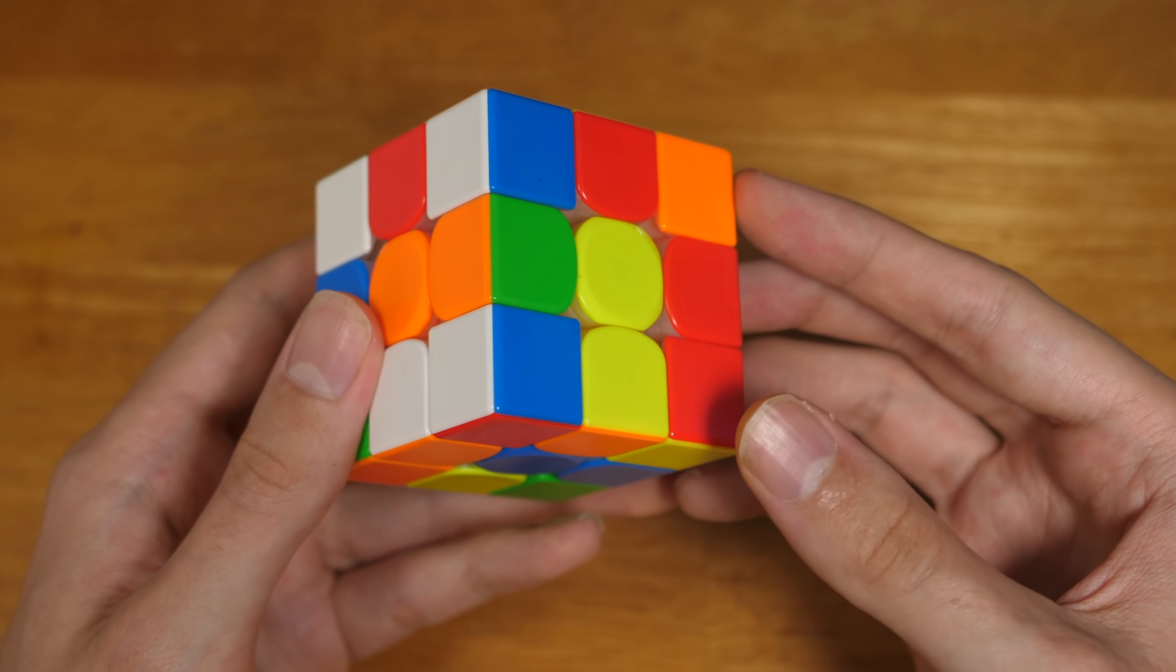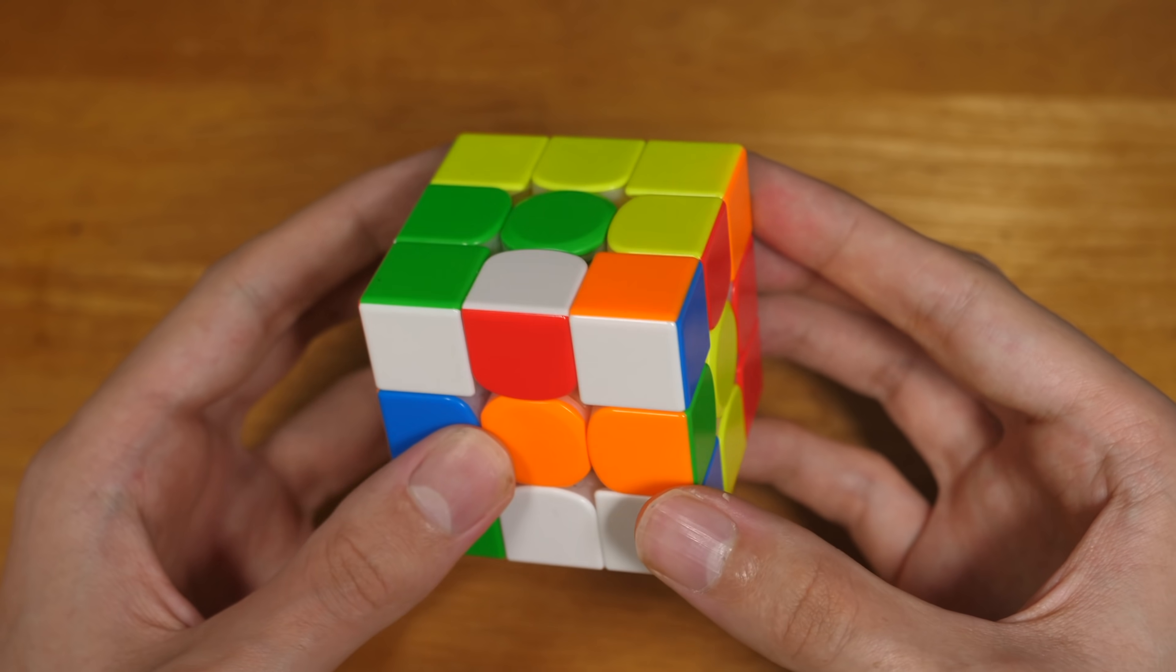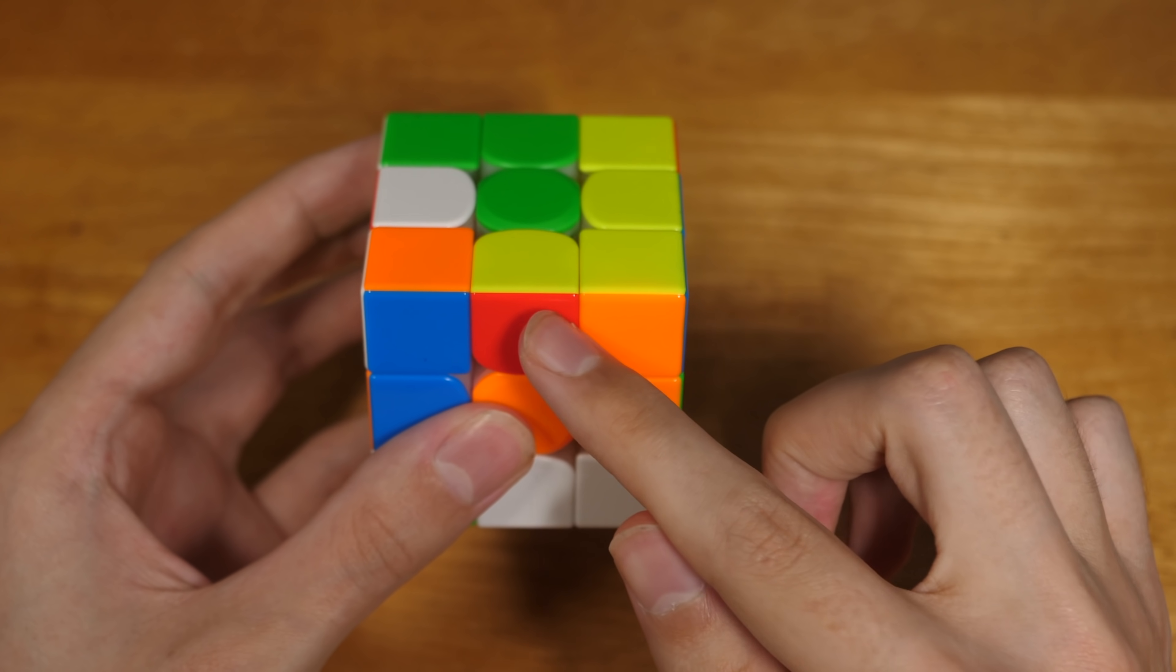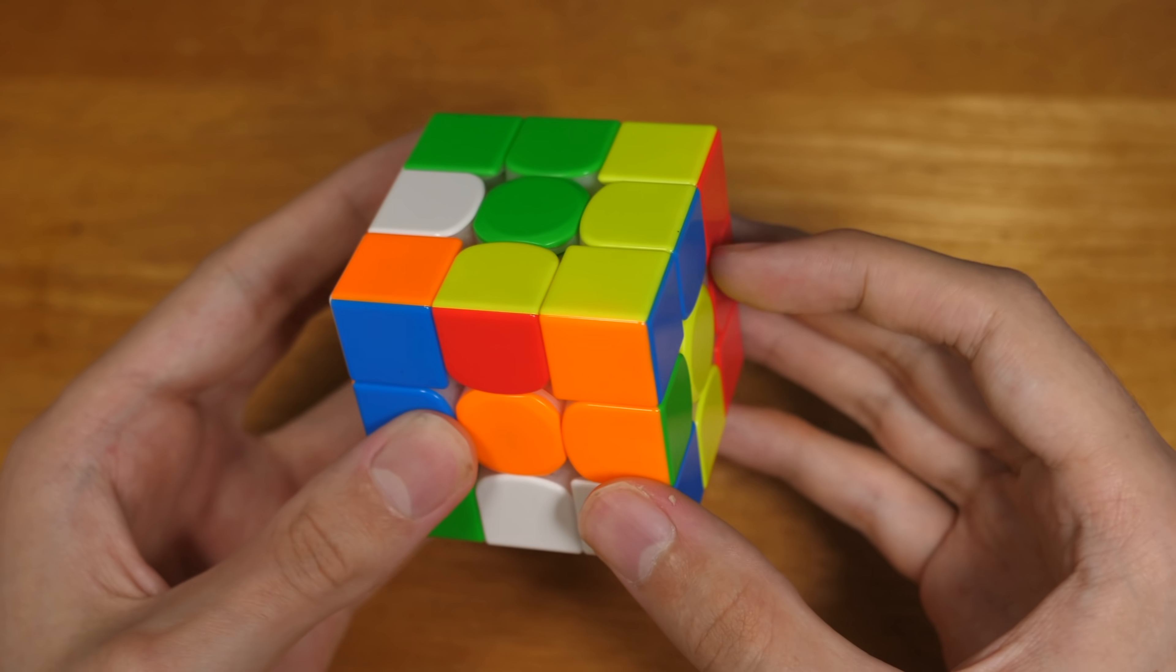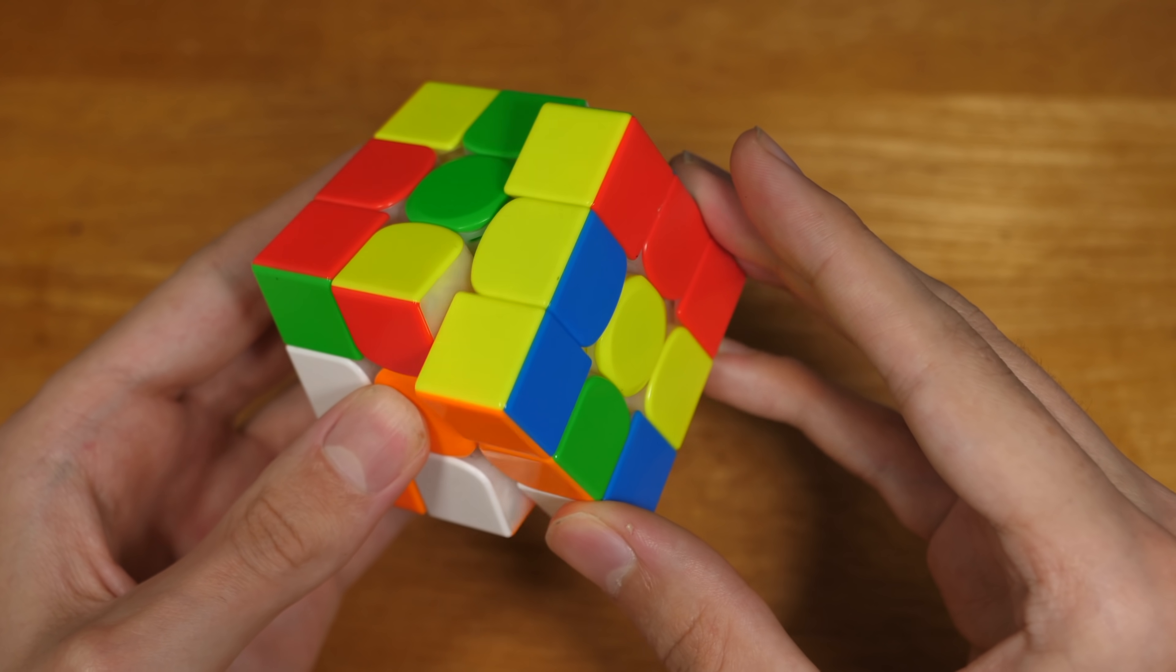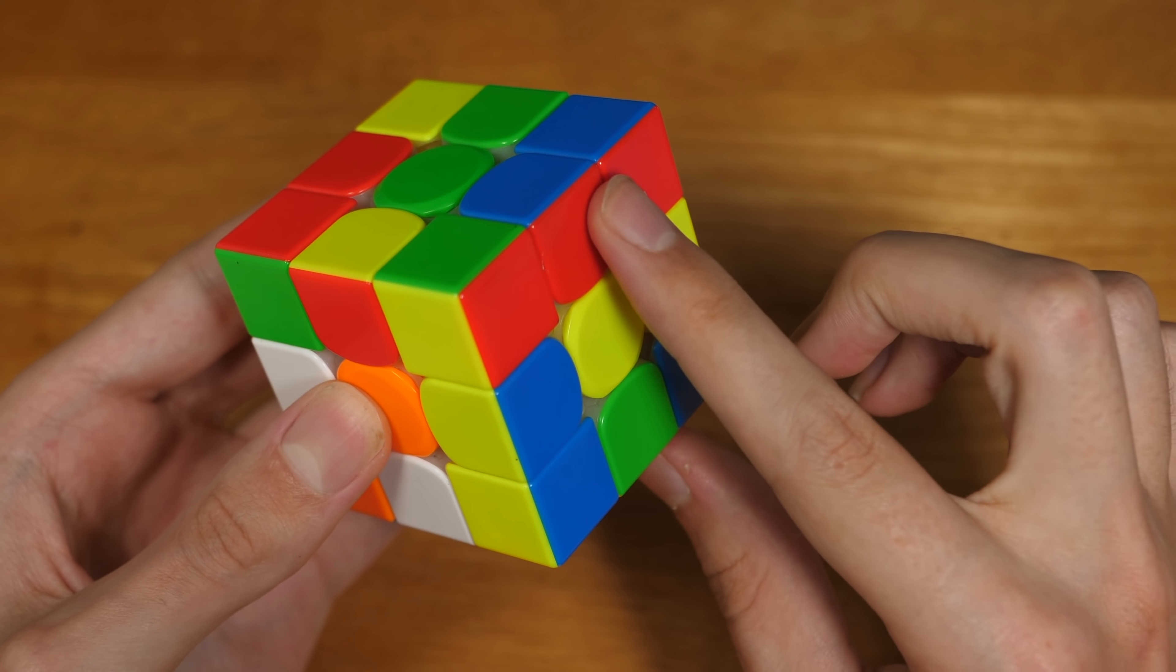He starts by bringing over this block, setting up this edge, inserting this second cross edge, and now bringing down these two.